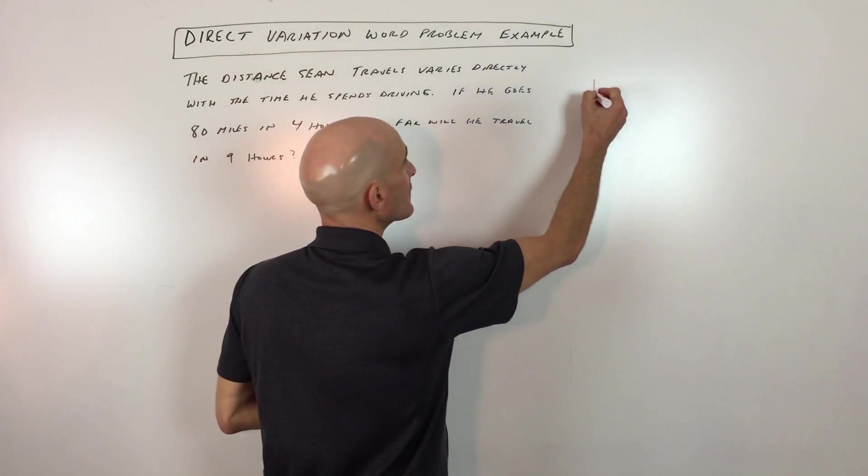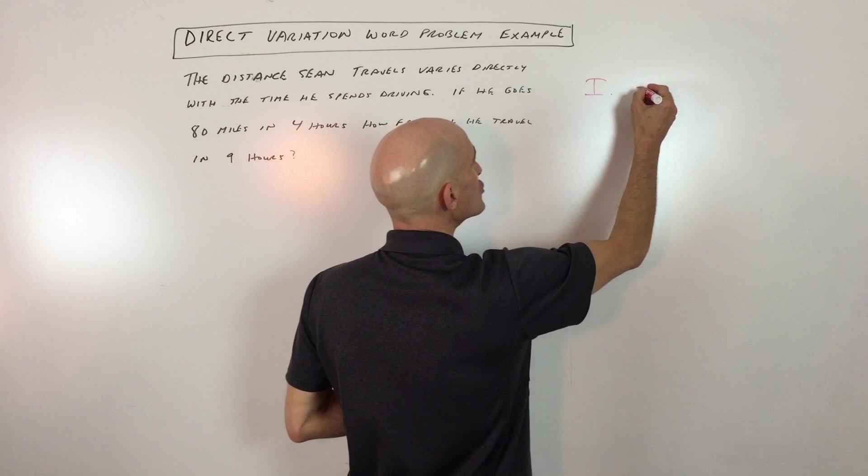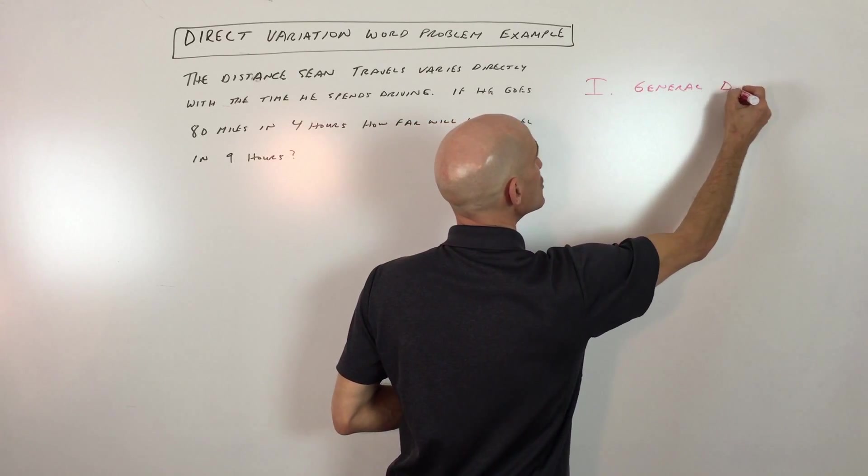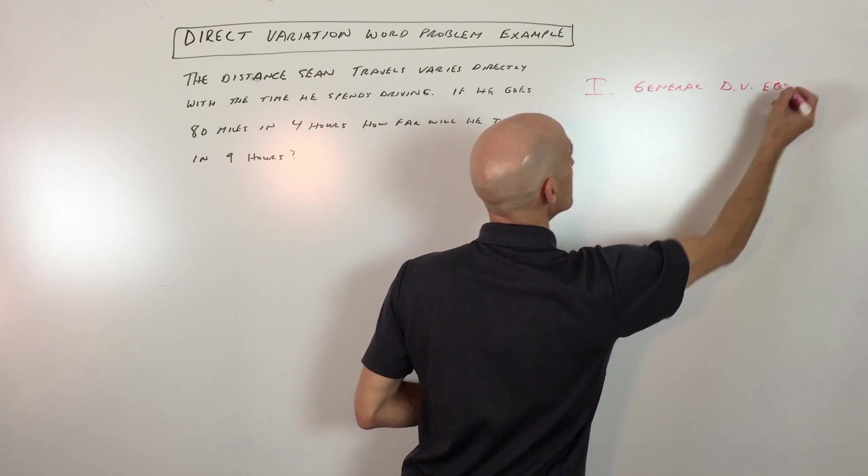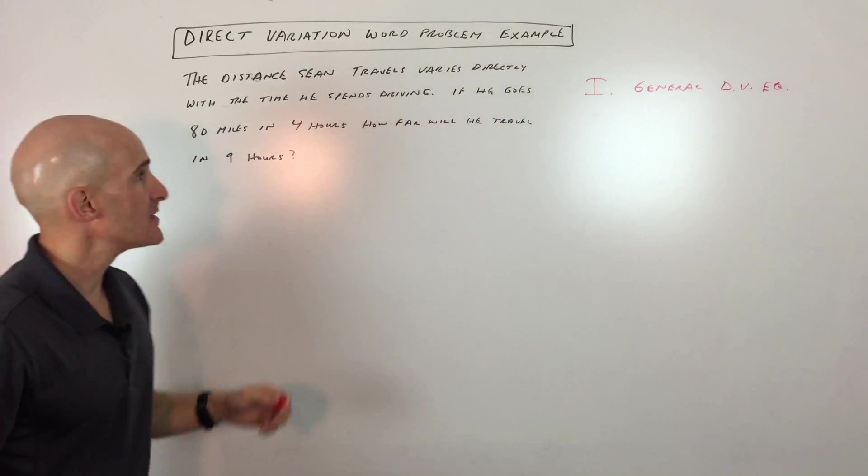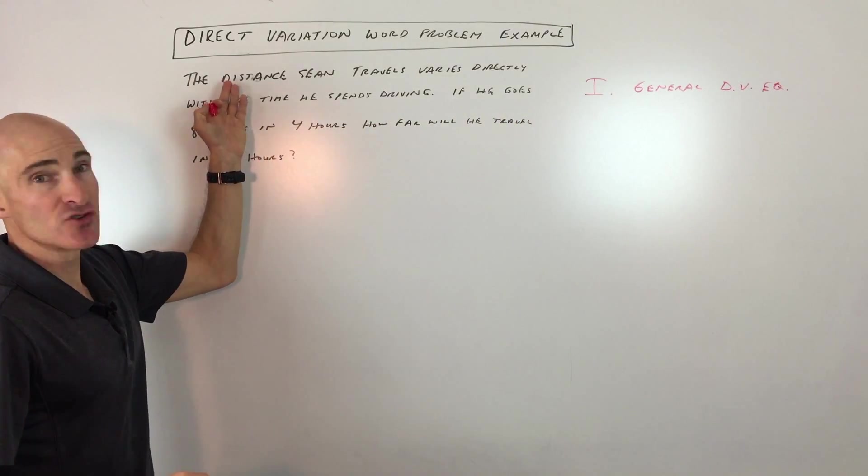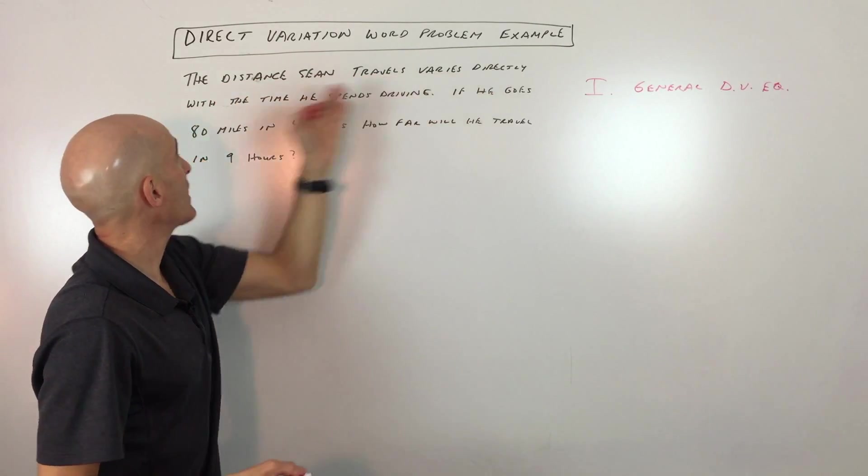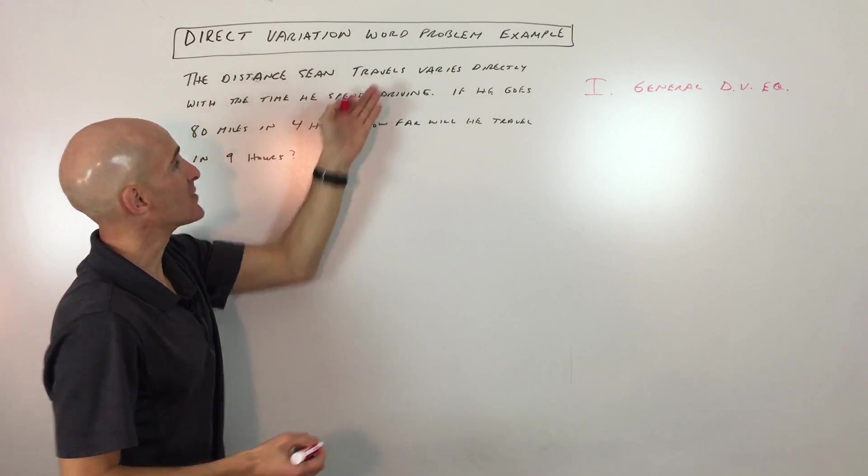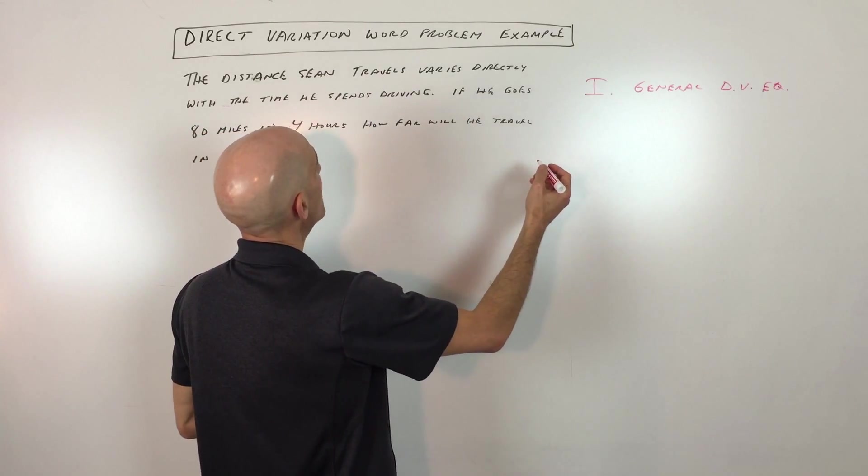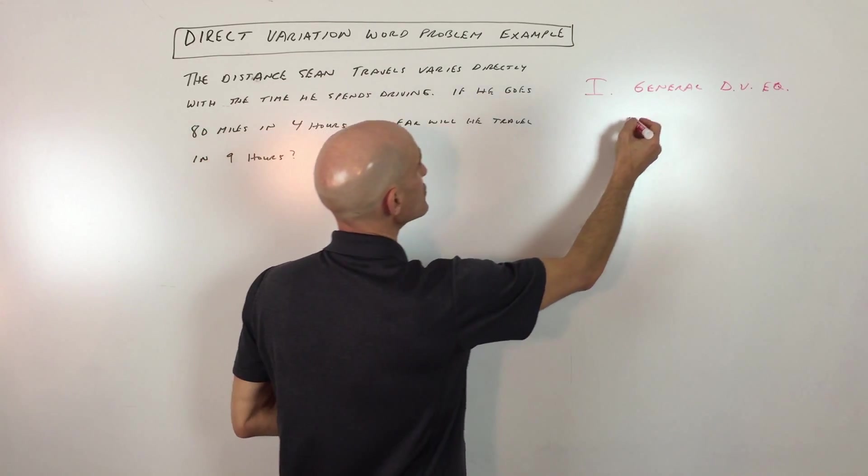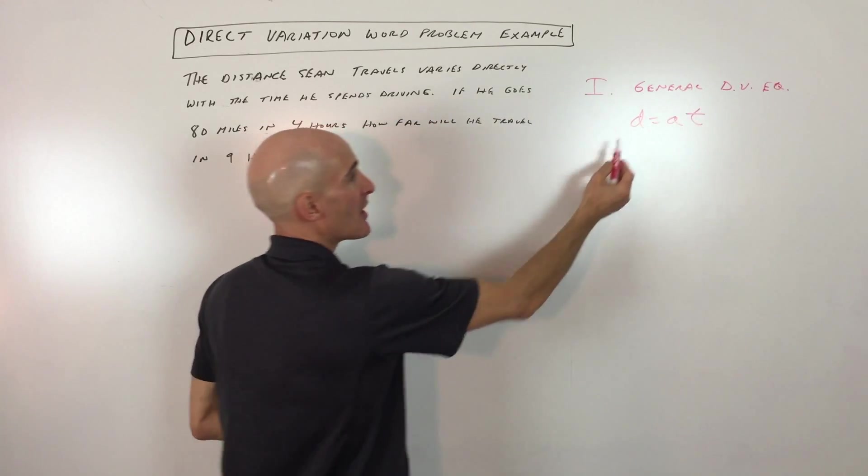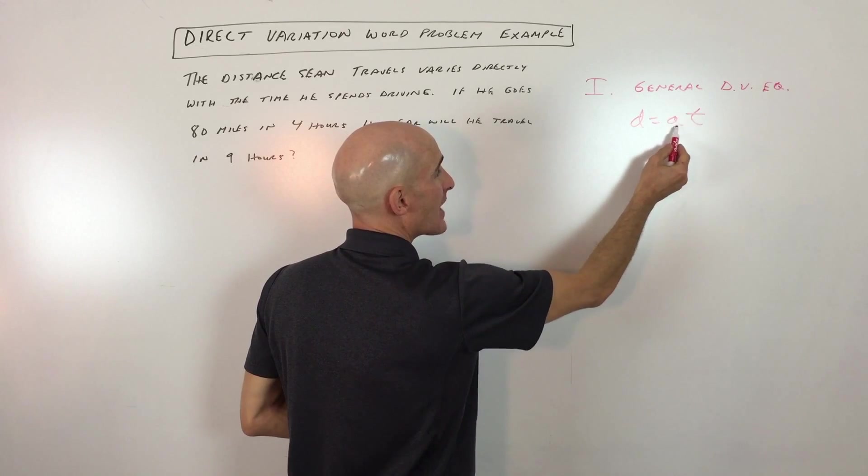Step number one: write your general direct variation equation. If you read the first sentence, it'll usually tell you - the distance Sean travels varies directly with the time he spends driving. So the distance he travels varies directly with the time. You have distance varies directly with the time.